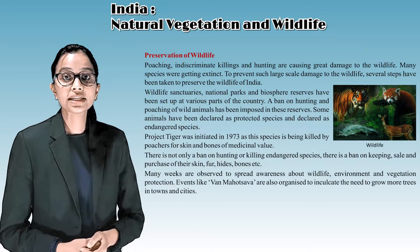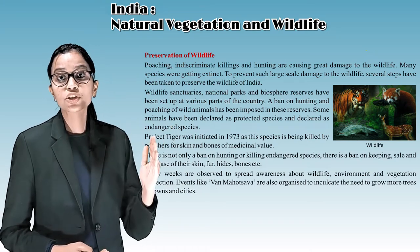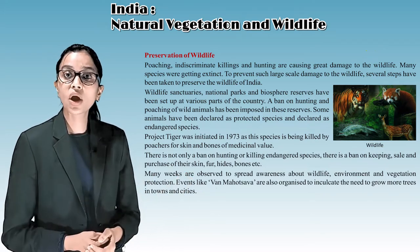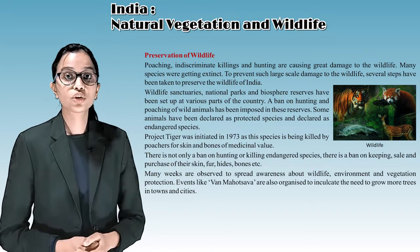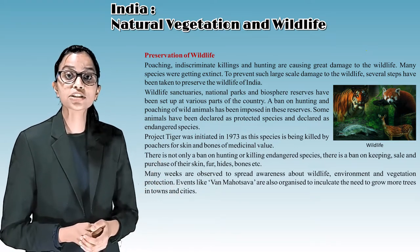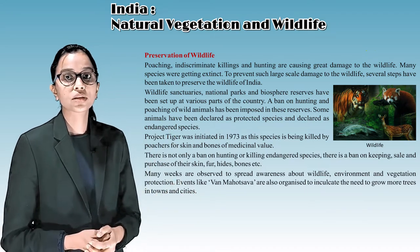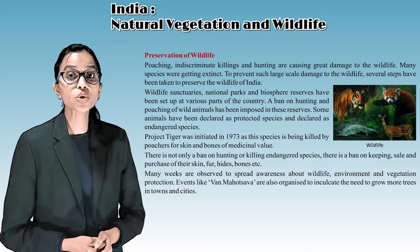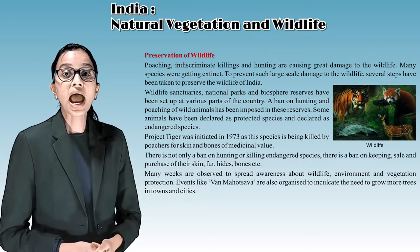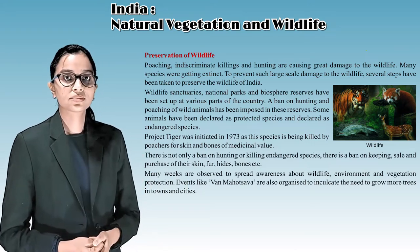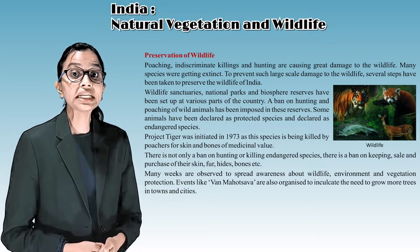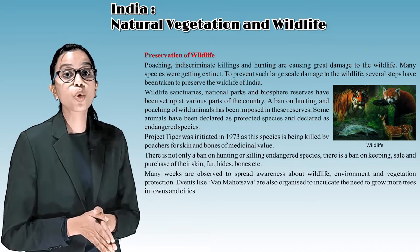To prevent large-scale damage to wildlife, several steps have been taken. Wildlife sanctuaries, national parks, and biosphere reserves have been set up across the country. A ban on hunting and poaching has been imposed. Some animals have been declared as protected and endangered species. Project Tiger was initiated in 1973 as tigers were being killed by poachers for their skin and bones of medicinal value.